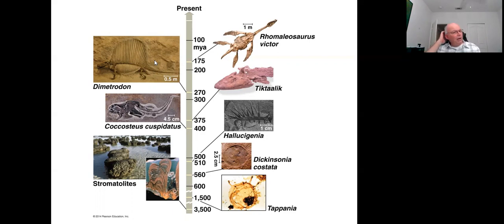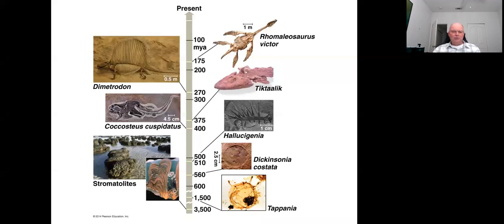Dimetrodon is an example — a lot of people think it's a dinosaur, but it's not reptilian at all; it's much closer to mammals and is on the branch that would ultimately lead to mammals. It was present right at the end of the Permian but did not survive the end-Permian extinction, which occurred as the large continental landmass Pangea started to break up again.